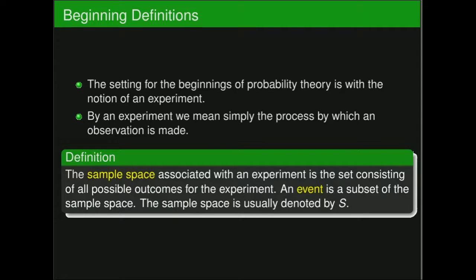The sample space associated with an experiment is the set consisting of all possible outcomes for the experiment. When we say all possible outcomes, we're thinking more in the theoretical sense rather than going into the laboratory and making measurements. We develop a theoretical model of how we think something is working, and from that we deduce what outcomes are possible. In the laboratory we're doing statistical measurements and may not get every possible outcome.